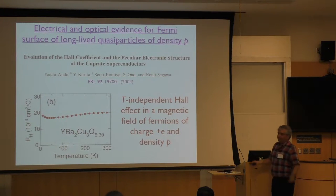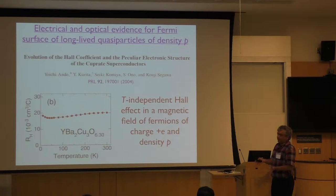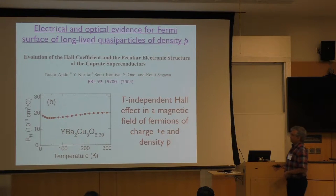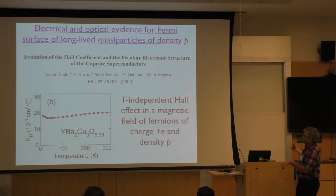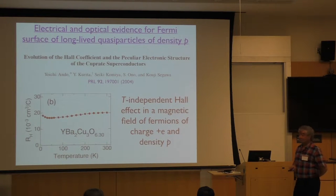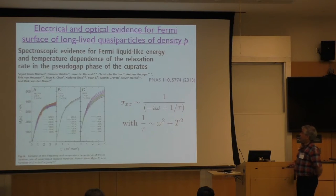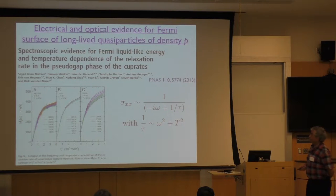That's the low-temperature state of a good semiconductor with density P. And that's what it looks like. But of course, from photoemission, we've been seeing that it's really rather a mess. But this looks very simple — this looks like a Fermi liquid of density P.